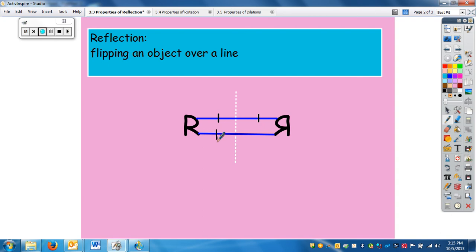When you're doing a reflection you have to make sure every part's the same distance from the line. If I would have R be here this would no longer be a reflection because R is no longer the same distance away from the line as the other R.